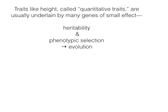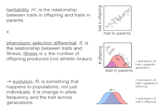Traits like height we call quantitative traits, and they're usually underlain by many genes of small effect. We can summarize the requirements as heritability and phenotypic selection leading to evolution. I've been glossing over these words, so it's time to provide some graphical, almost definitional, explanations that you can hold onto.